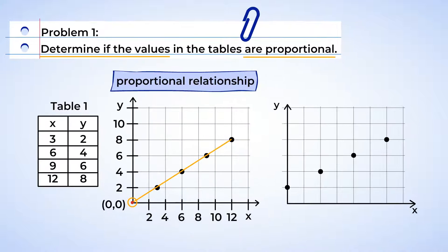Check out this graph. Although the points create a straight line, it does not pass through the origin. These values are not proportional.